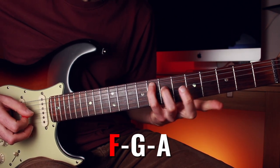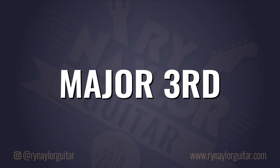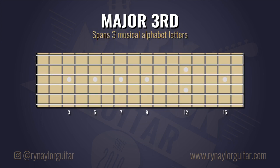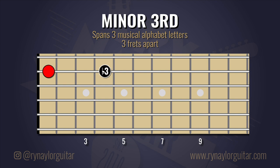Each interval in music has a number and a quality. There are two types of third: a major third and a minor third. The major third spans three alphabet letters that are two whole steps apart, four frets horizontally — the first to the third note of the major scale. The major third interval is abbreviated to a 3. If a major interval is lowered, it becomes a minor interval. A minor third therefore also spans three letters, but it is the distance of three frets horizontally. The minor third interval is abbreviated to a b3, or flattened three.